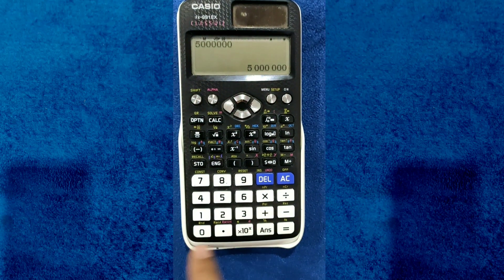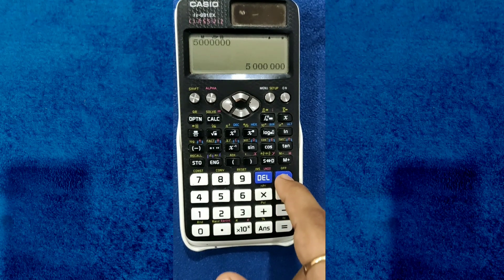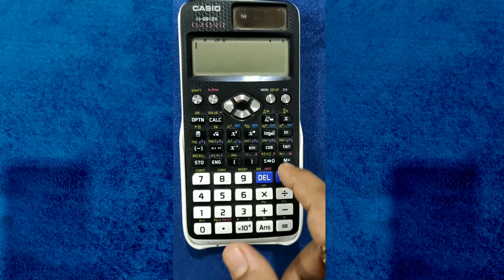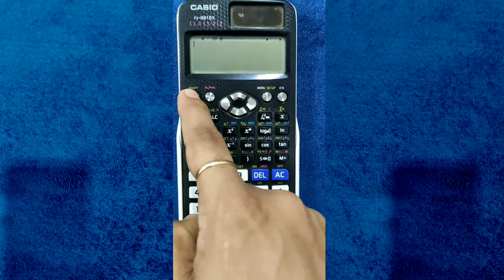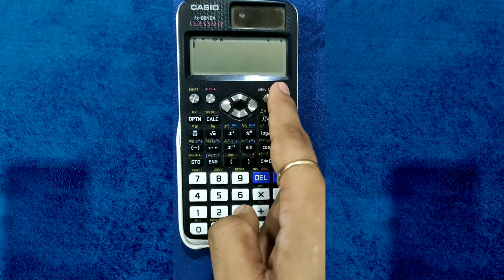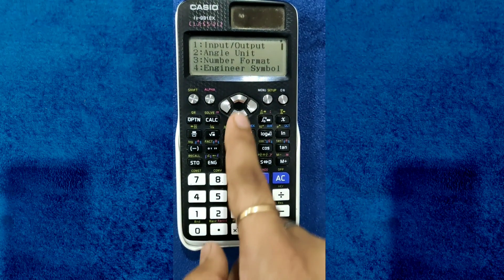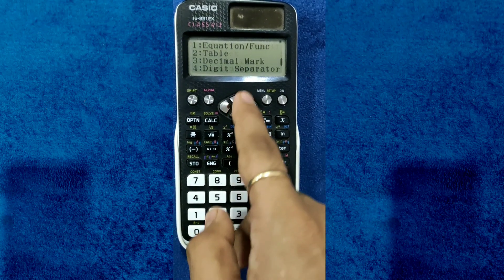For activating this, all you need to do is go to Shift, then Setup. You need to go to Shift, then go to Setup, look for Separator, scroll down below, scroll again.